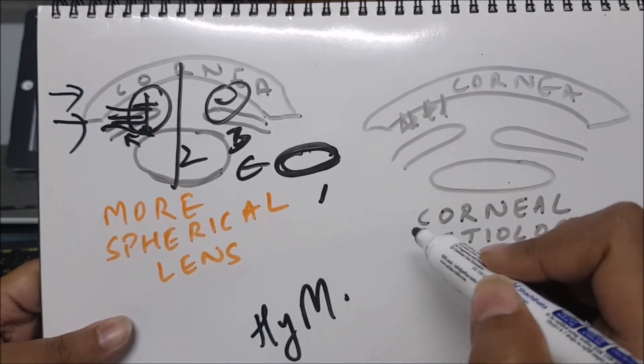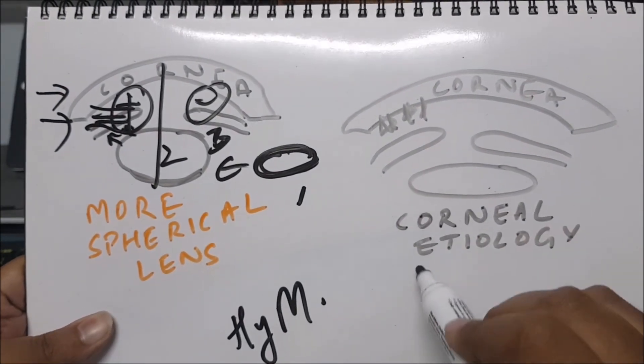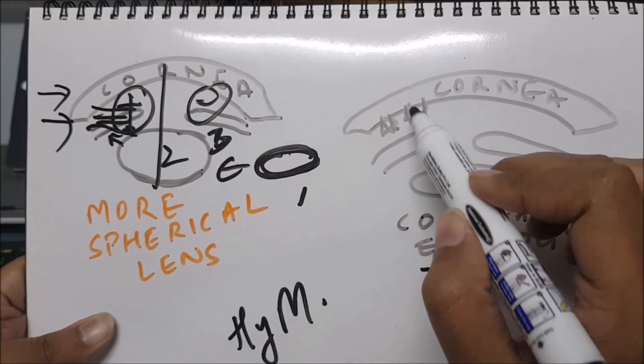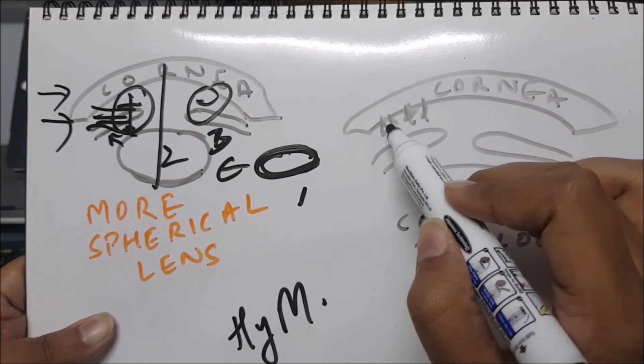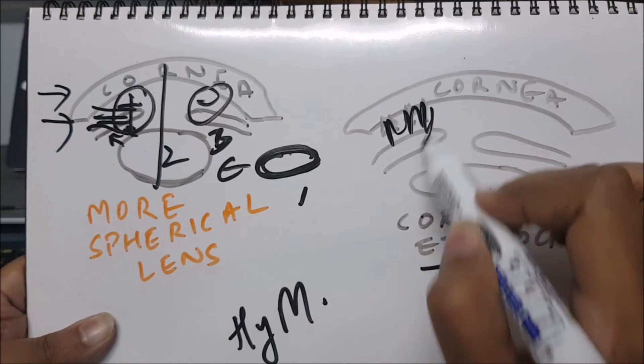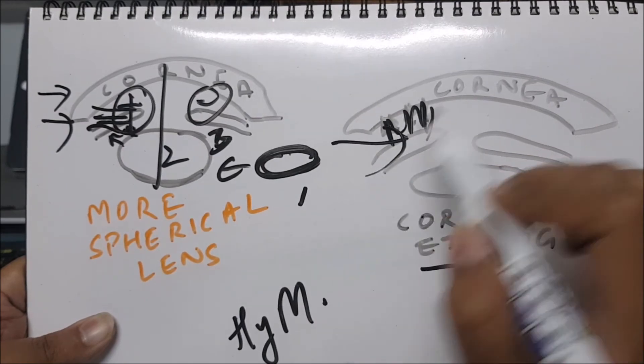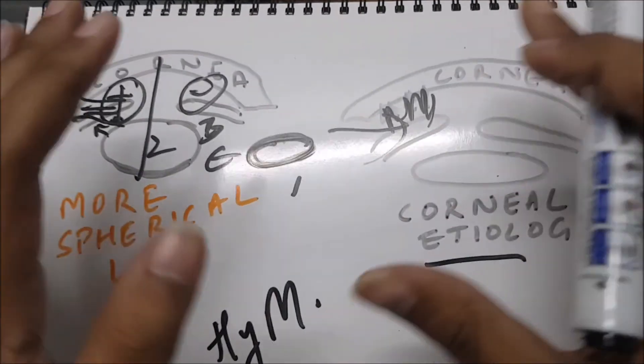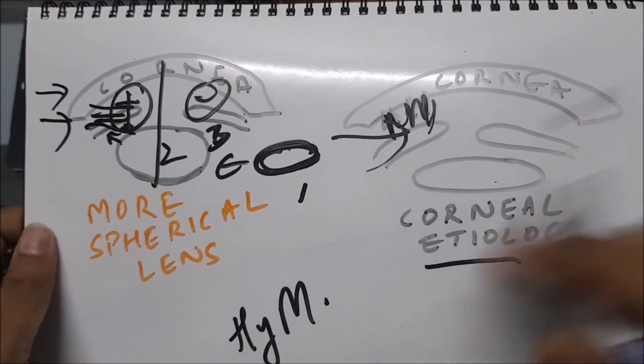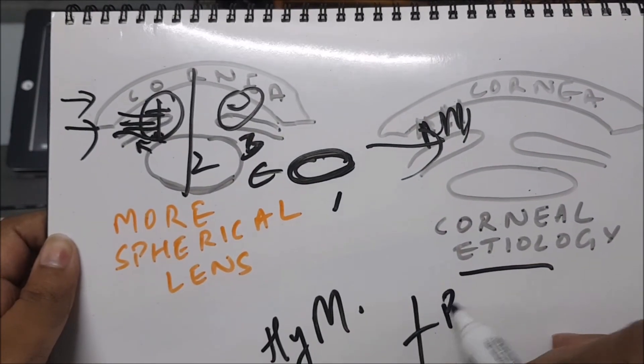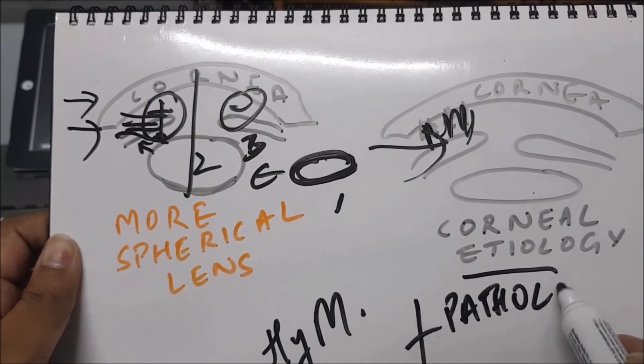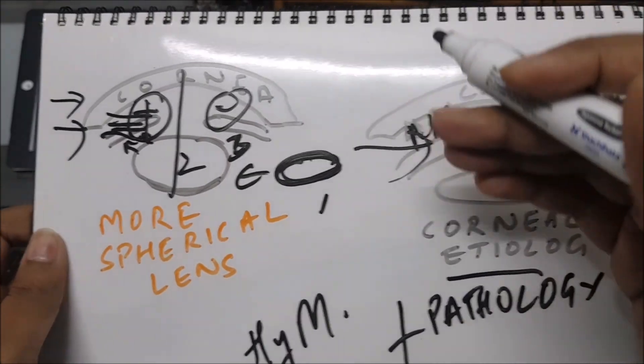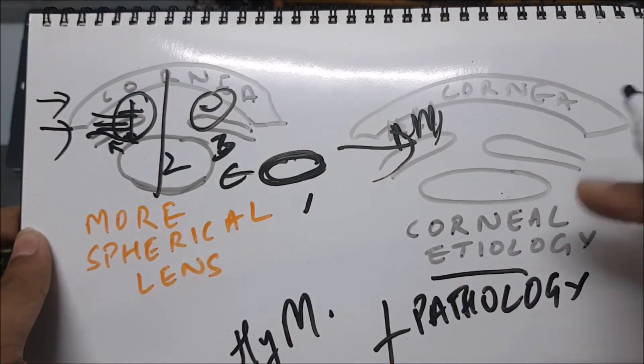Let us talk about corneal etiology also. In corneal or synechiae adhesive glaucoma, they can get attached by fibrous bands. Again, this light cannot pass through, so the obstruction occurs. In all this discussion, what we see is the pathology is important.